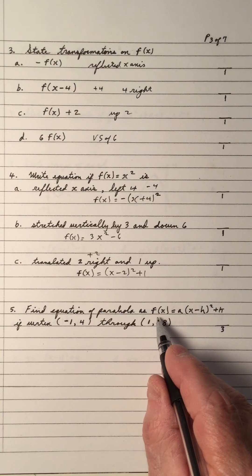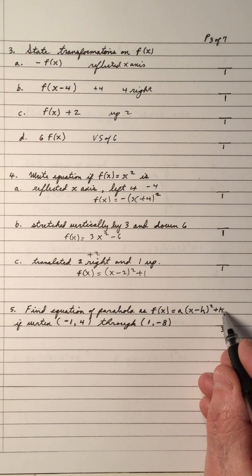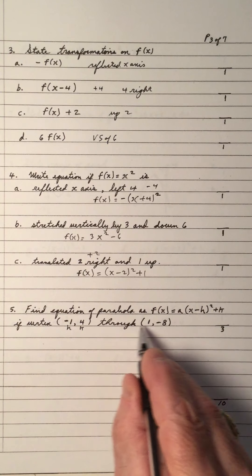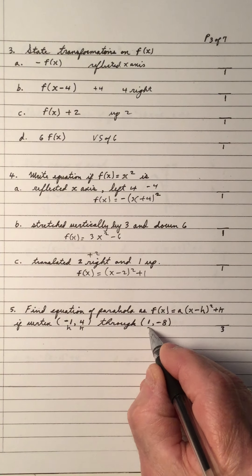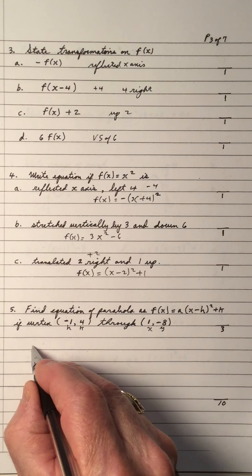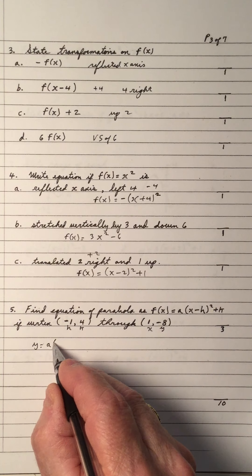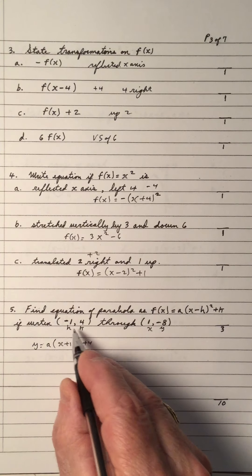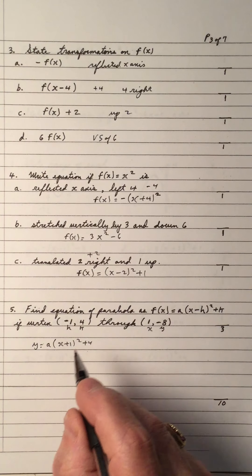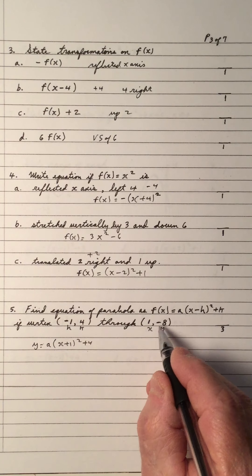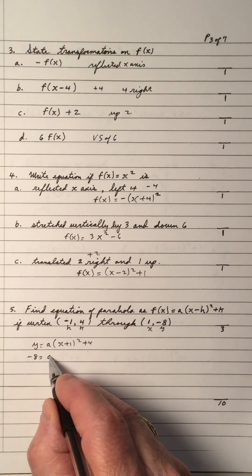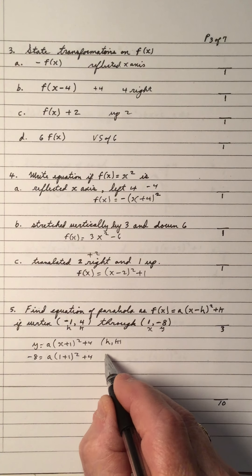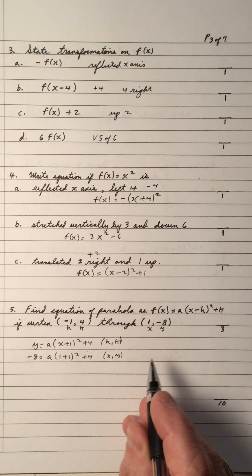Number 5: find the equation of the parabola in vertex form — f(x) equals a times (x minus h) squared plus k. The vertex gives h and k; x and y are general coordinates. Sub the vertex in first, then the known point (x, y). I put h and k in first, then the x and y after, then simplify.